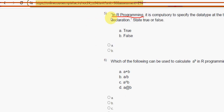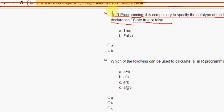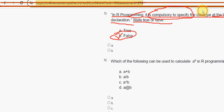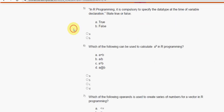Fifth question: In R programming, is it compulsory to specify the data type at the time of variable declaration? True or false? For the fifth question, the answer is option B — false. There is no need to specify the data type in R programming at the time of variable declaration. Mark option B.